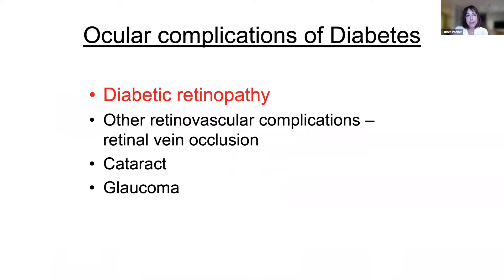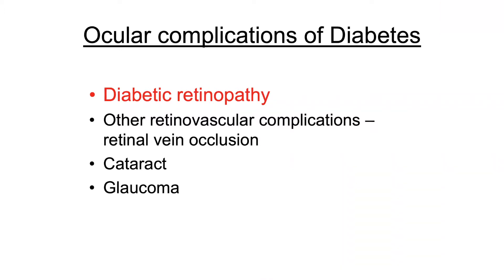Ocular complications of diabetes: we're going to focus on diabetic retinopathy and specifically maculopathy, but don't forget the other complications of diabetic eye disease. Retinovascular complications are common, such as retinal vein occlusion, cataract, and glaucoma.